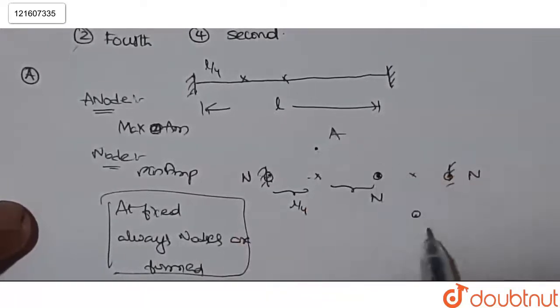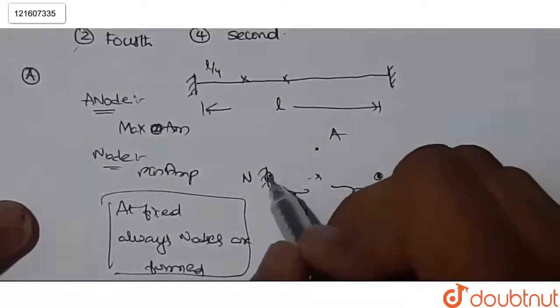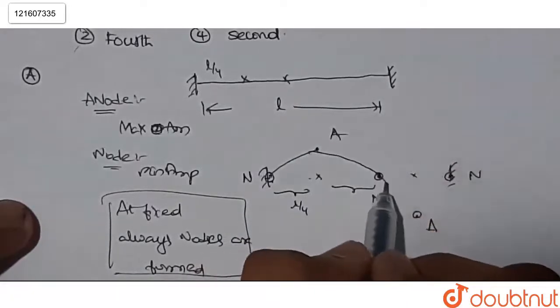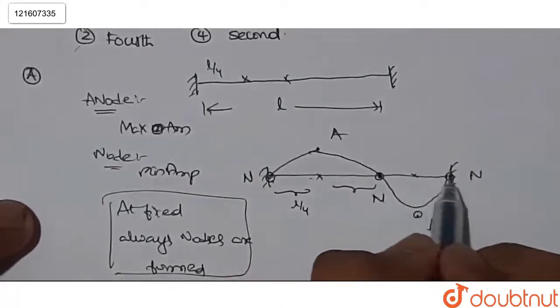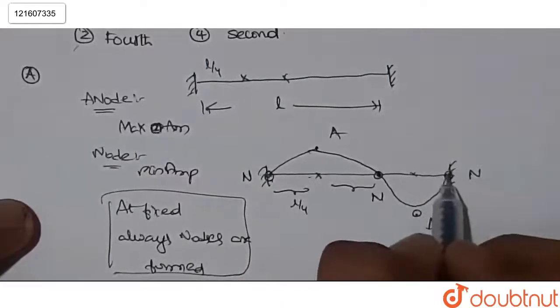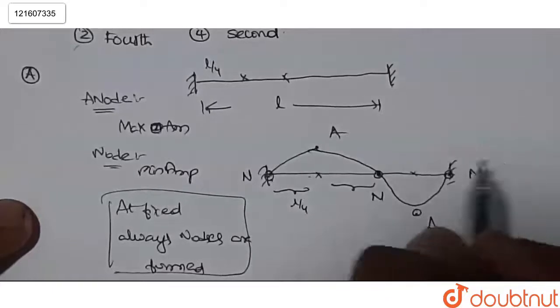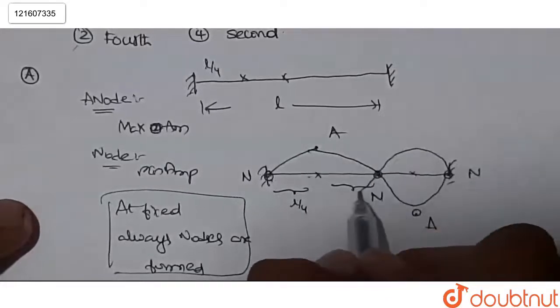Here is node. This is node. This is node. This is node and this will be node. So this will be antinode and this will be antinode. So join this. So this is the wave. After reflection, it will come like this.